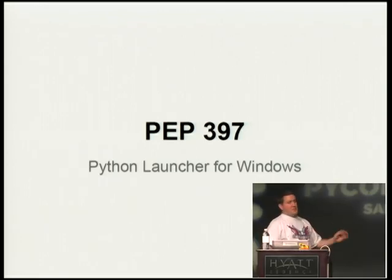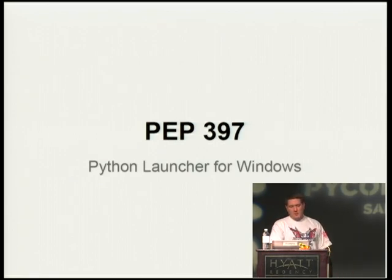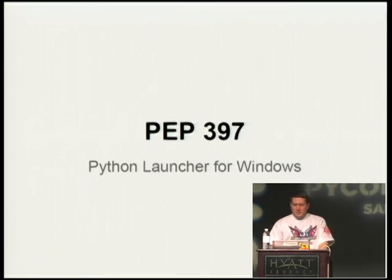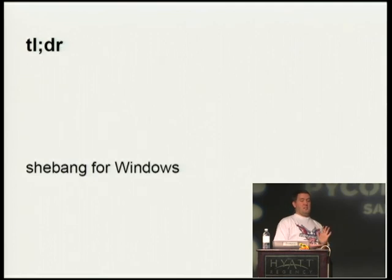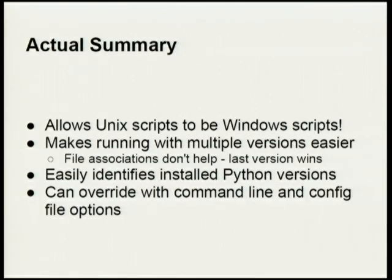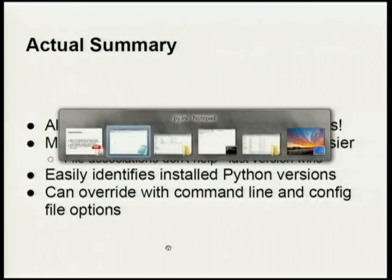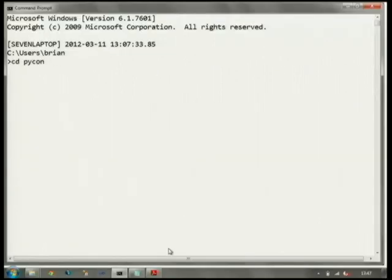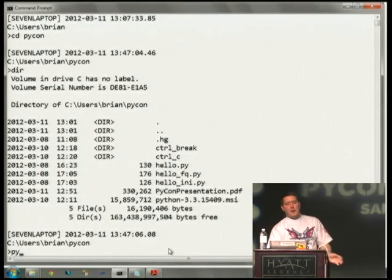PEP 397 is probably the most interesting thing in this whole talk, and a lot of people seem to like it. Especially because, as my graphs show, people are actually using Python 3. The short of it is that it's a shebang processor for Windows scripts. There's a nice little launcher called py.exe — it finds various Python installations for you, and given what you have in the first line of a script as you would on Unix, it will use the right Python for it. I have py on my path nicely — I just run 'py hello'.